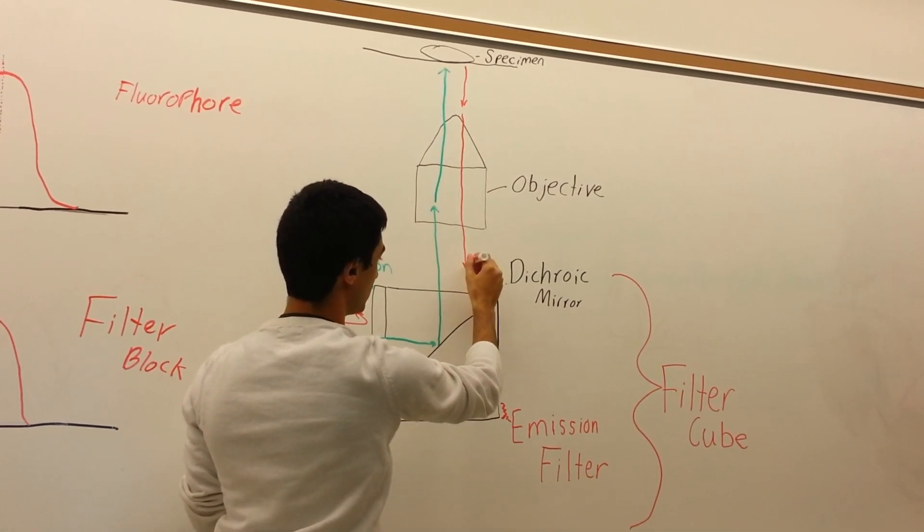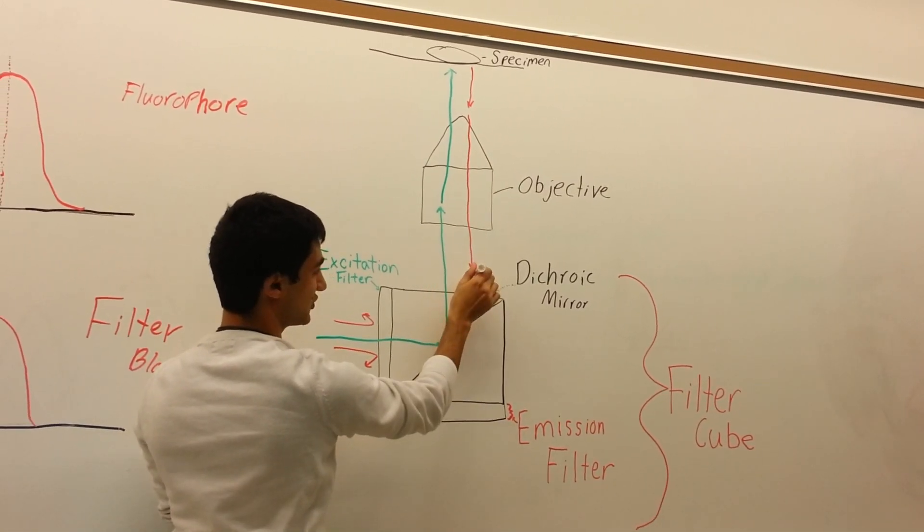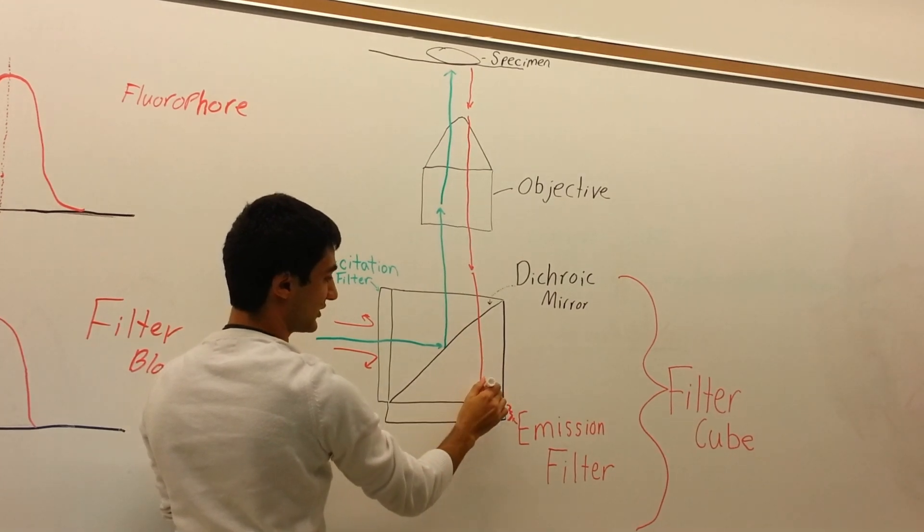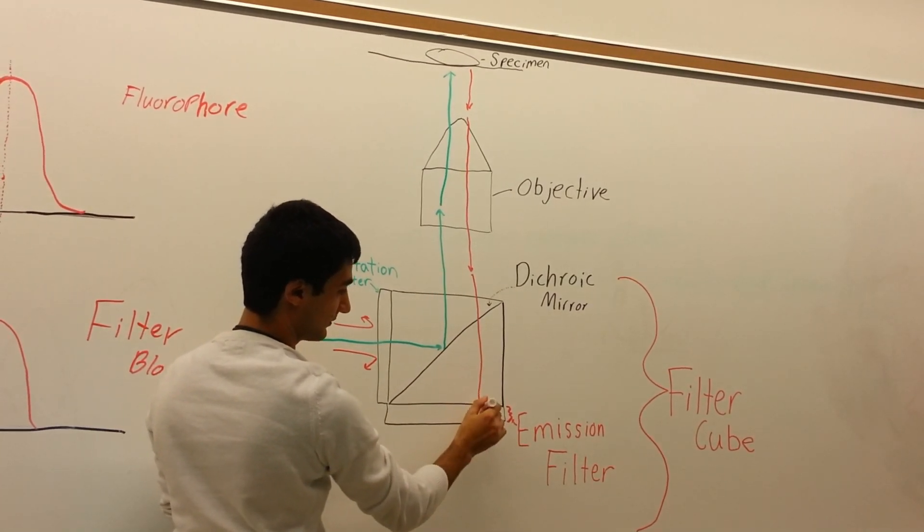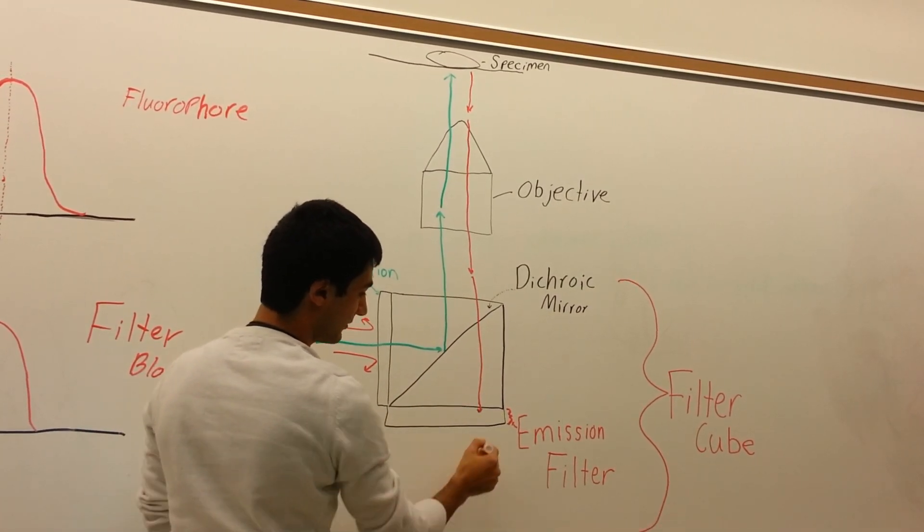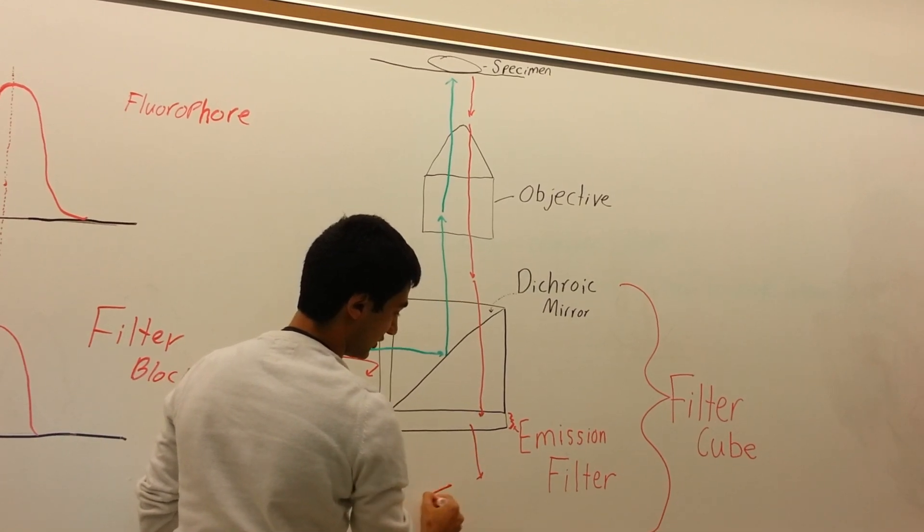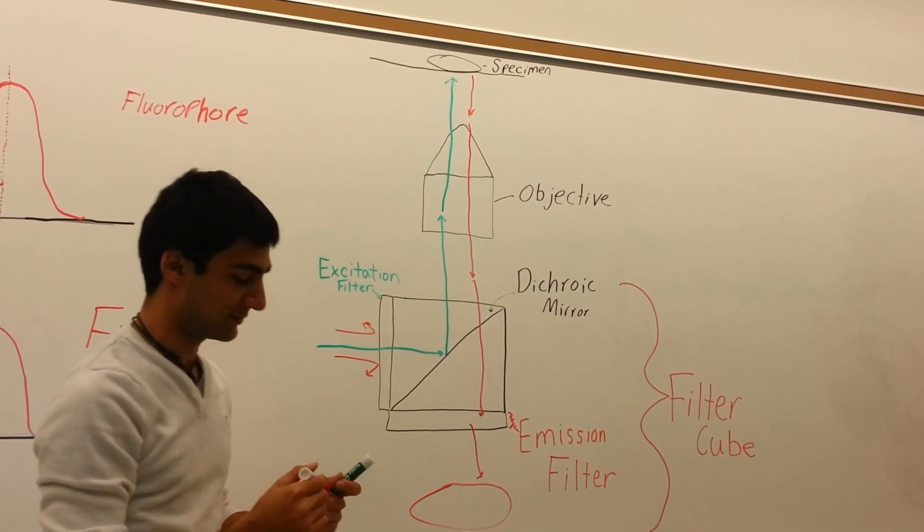The difference here is it's going to go straight through the dichroic mirror, where it is going to hit the emission filter. From here, you get image formation of the specimen.